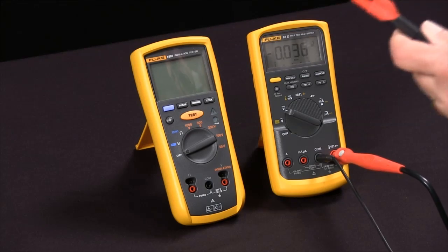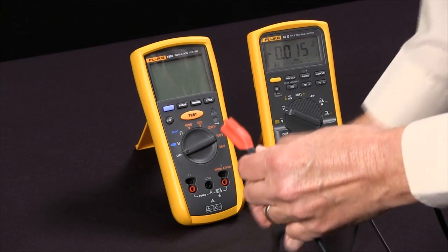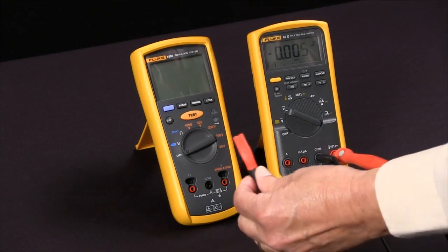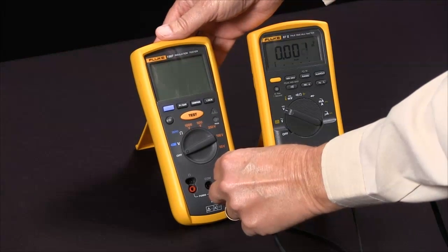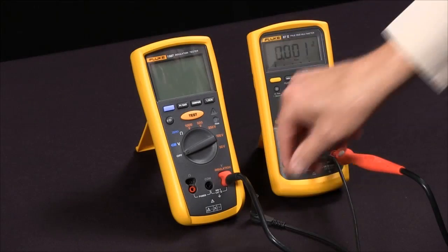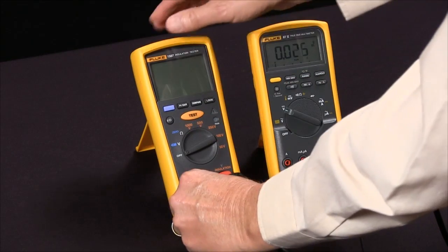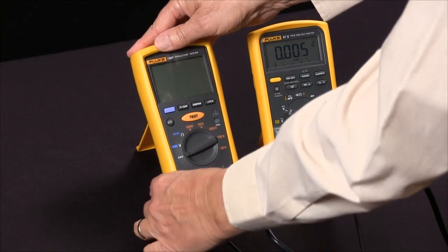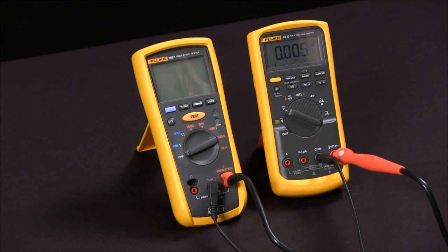We'll take our special connector that we can only plug in one way into the insulation test. You notice everything that's related to the insulation test is in orange, and then we'll plug in our common lead. Now we're ready to do our insulation test.